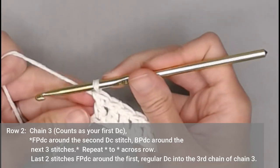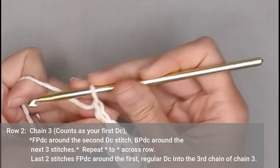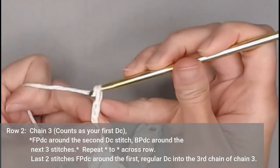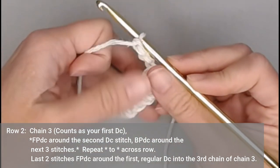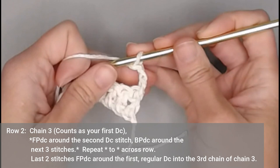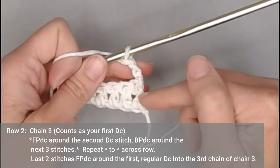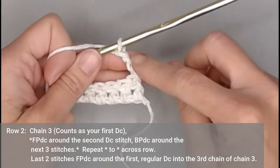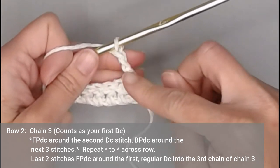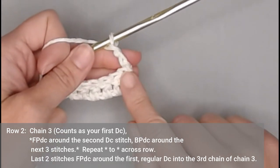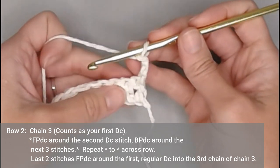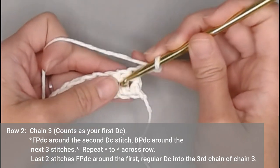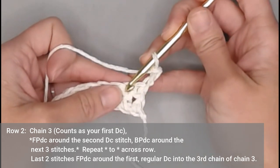To move on to row two, we will chain three. One, two, three. Turn our work. That chain three counts as our very first stitch, our very first double crochet. It will actually take the stitch, take the space of the first stitch. Our next stitch will be a front post double crochet made around the second double crochet stitch.